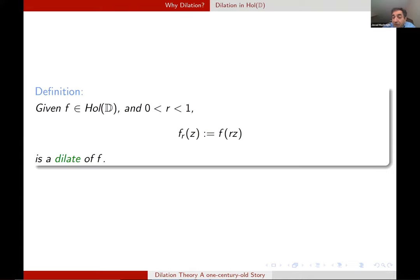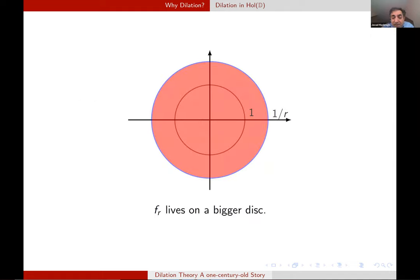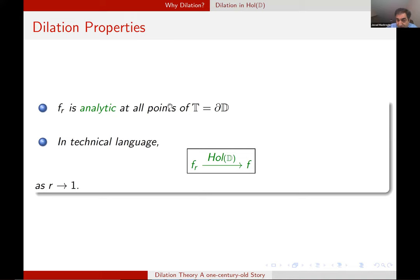The definition is very simple. F of Rz is equal to F at the point Rz. That's a dilate of F. The good thing about F_R is that it lives on a bigger disk, at least our radius one over R. So at all point of T, the open unit disk, F_R is analytic. And when R goes to one, F_R converges to F uniformly on compact subsets of D. In technical language, it's hidden in this boxed formula. When we say F_R goes to F in Hol(D), it means precisely the same thing. We will see several of these boxed formulas in the second part.